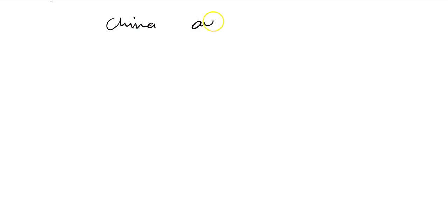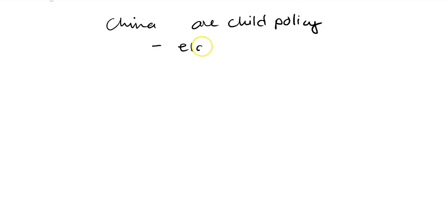For the final part of this question, you're asked to evaluate international and national policies about population control or development policies. The obvious one that you chose is the China one child policy. You sort of elaborate a bit on what that is, which is great. For that, you can get two marks.